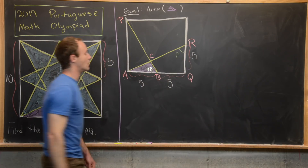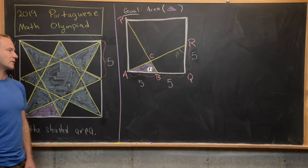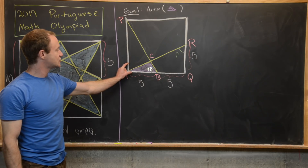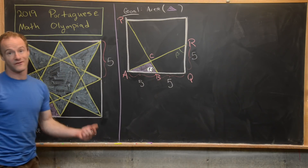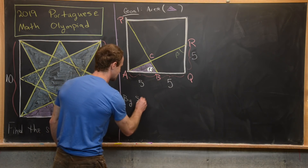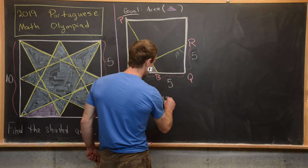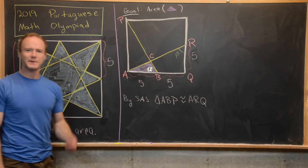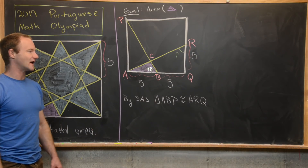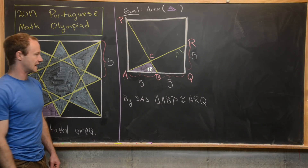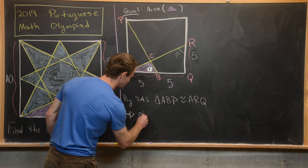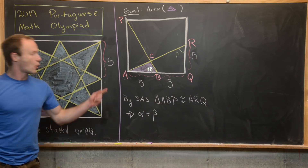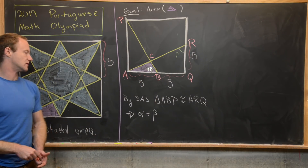Notice that triangle ABP and triangle ARQ are congruent. We can see that by side-angle-side: they each have one side of length 10, then a right angle, then a side of length 5. By SAS, triangle ABP is congruent to triangle ARQ. That means angle alpha — angle ABP — corresponds to angle ARQ, so alpha equals beta.